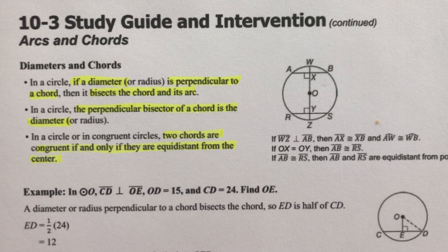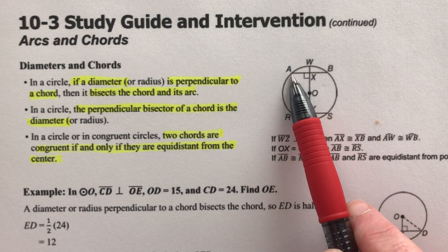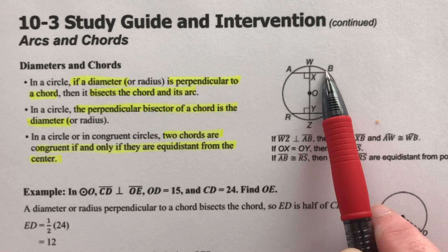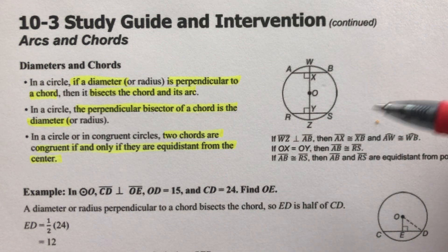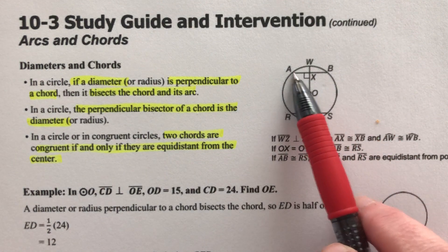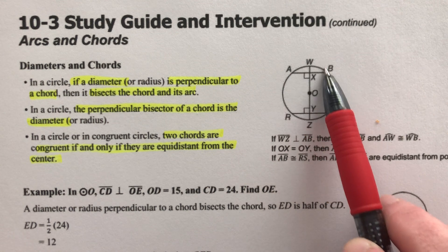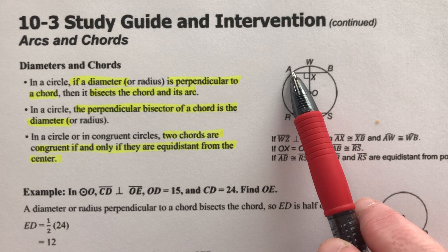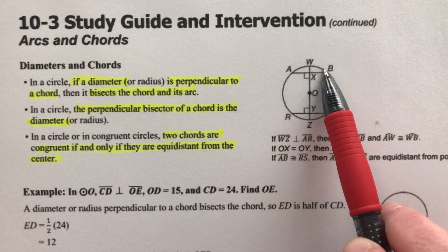This video covers part two of Lesson 10-3, Arcs and Chords. When we have a circle, a chord is a line segment that starts on one side of the circle and extends to the other side. If it's the diameter, it goes through the center, but a chord doesn't have to. A chord marks off a section of the circle — like the pizza crust — and that section is called the arc.